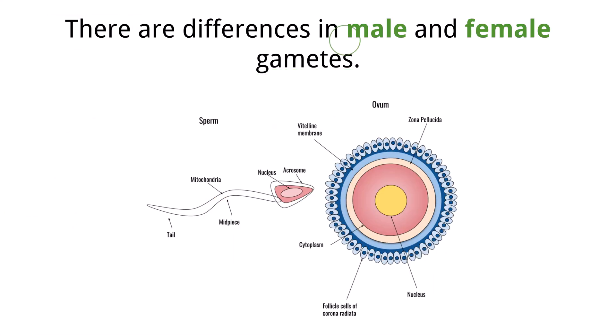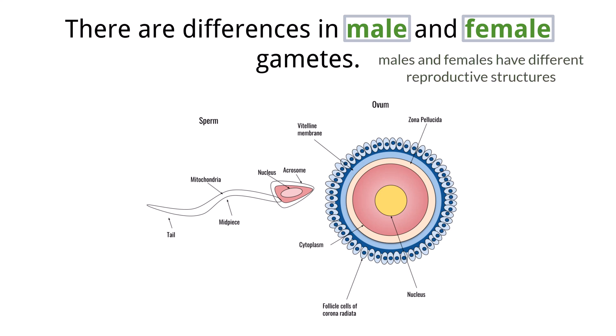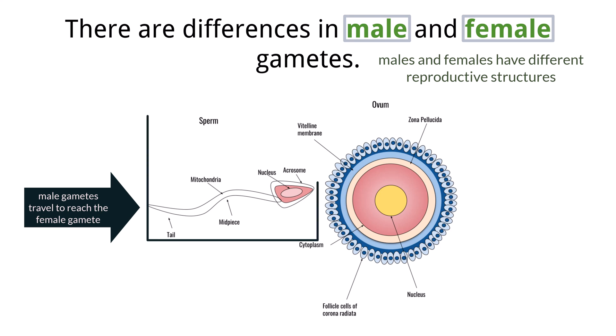Separating sexes into males and females for sexually reproducing organisms sheds light on how their reproductive structures operate. The primary difference is that male gametes travel to reach the female gametes, and this brings about differences in morphology between them, even though both are created via meiosis. Sperm are the male gametes and are motile due to the presence of a flagella. They are also much smaller than the egg, which increases the swimming efficiency of the sperm. When a sperm fertilizes an egg, the only thing the sperm contributes is the haploid nucleus.